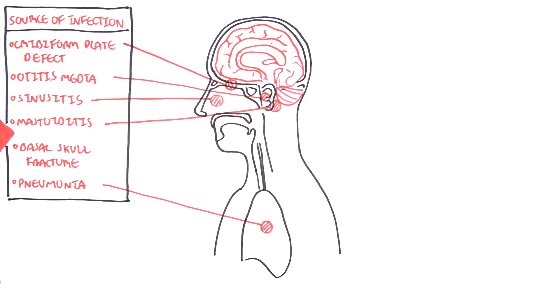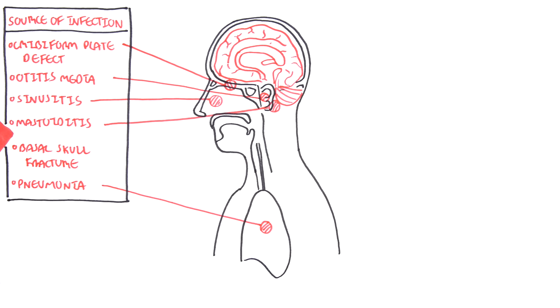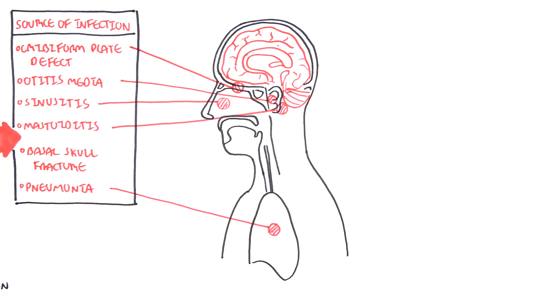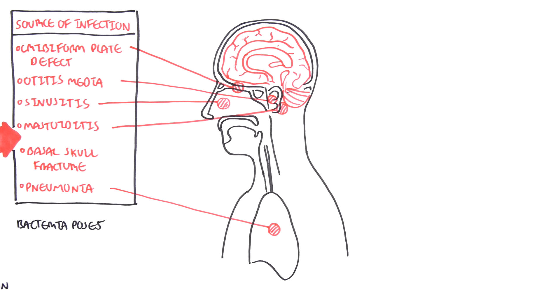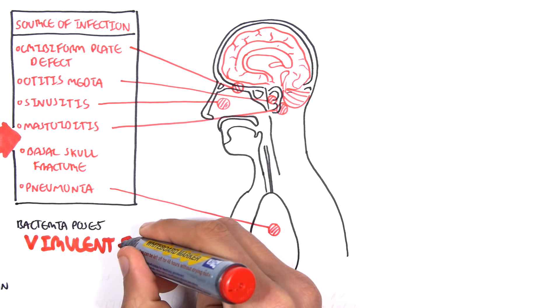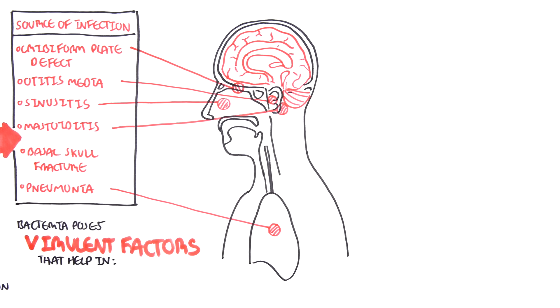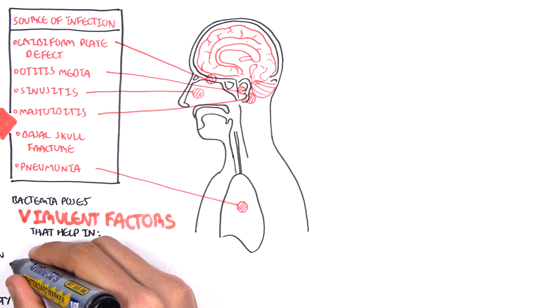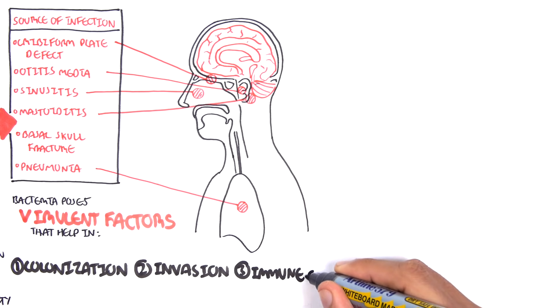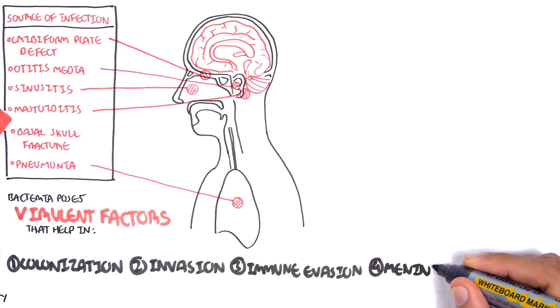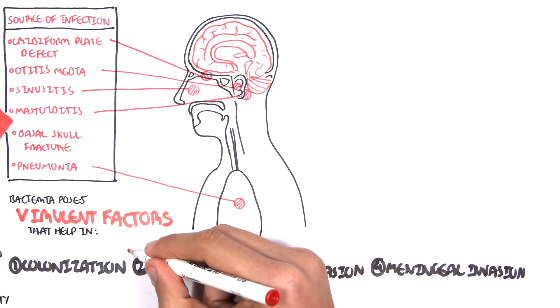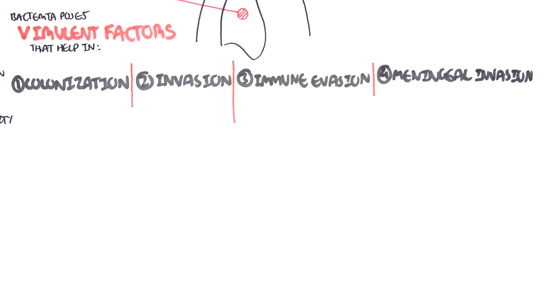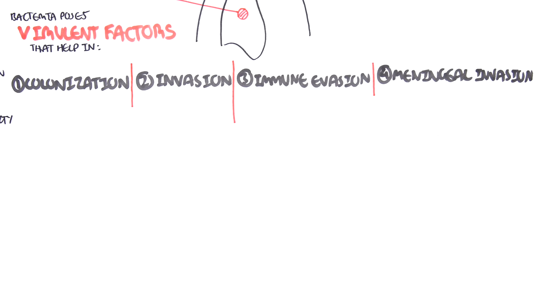So now let's look at the pathophysiology as to how the bacteria get from the primary problem into the meninges and cause a problem. Bacteria themselves pose virulent factors that help in four aspects in the pathophysiology. In order to learn about these four aspects of bacteria virulence, let us create a scenario.